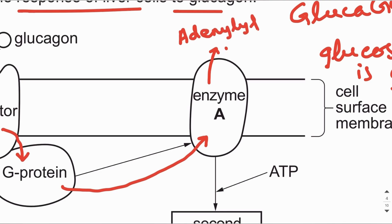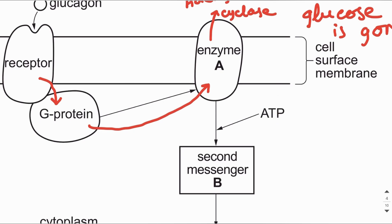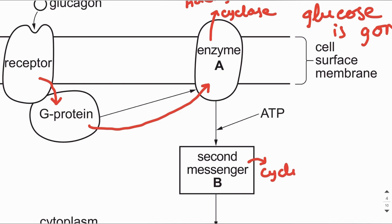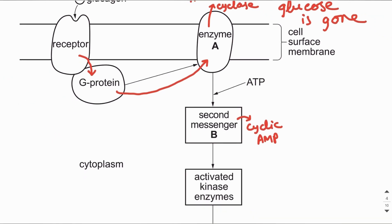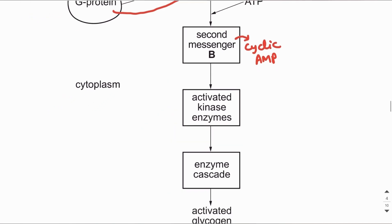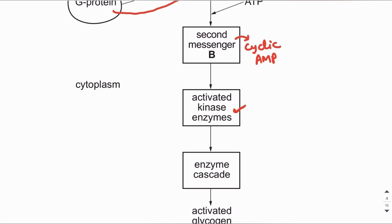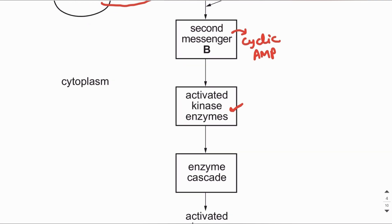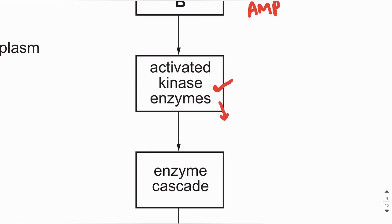G protein in turn activates a membrane enzyme known as adenylyl cyclase. Adenylyl cyclase converts ATP into cyclic AMP, which is the second messenger. Cyclic AMP then activates kinase enzymes, which further activate an enzyme cascade — a series of enzymes that are activated in sequence.